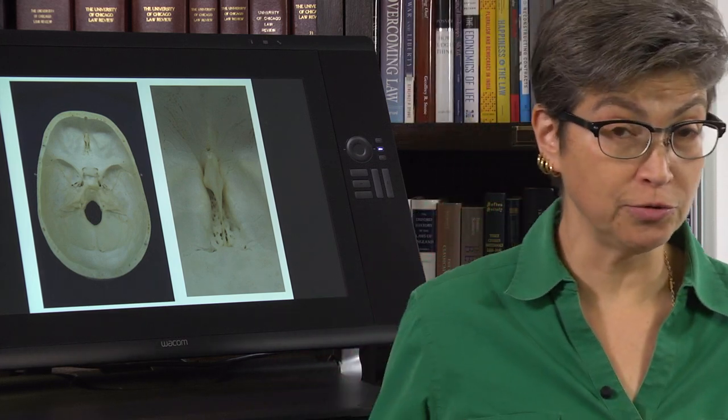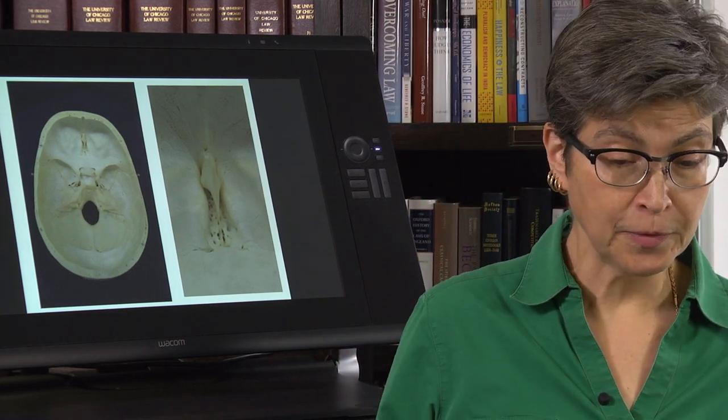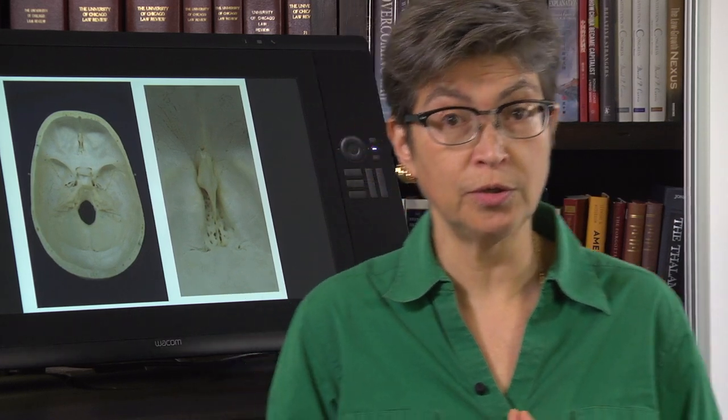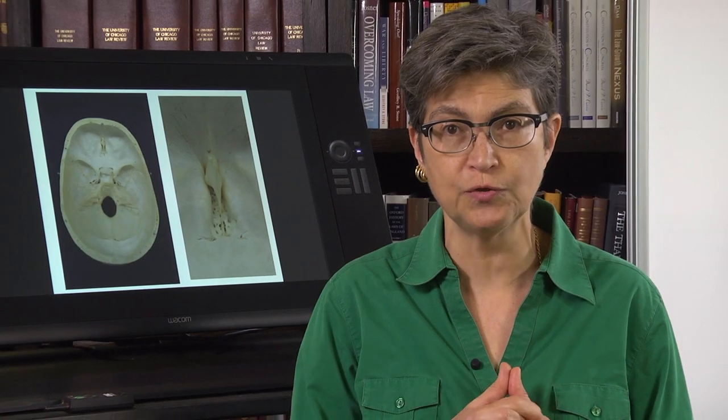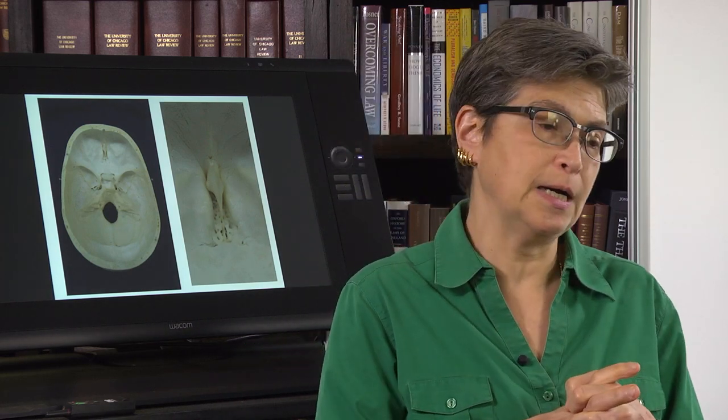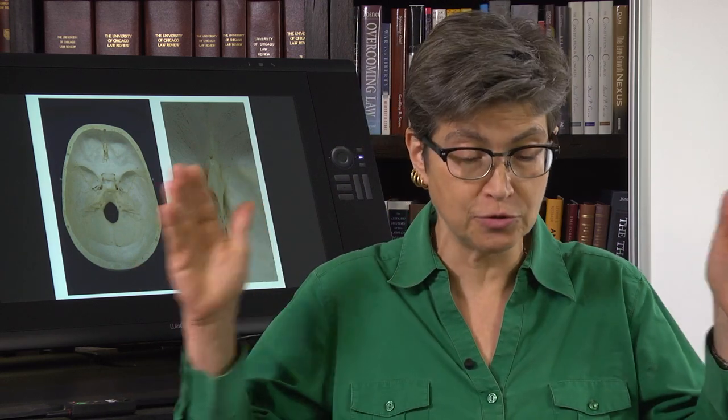We're going to talk about cranial nerves for a while. These are extremely important and incredibly useful diagnostic indicators. You need to know the cranial nerves and be able to distinguish whether a lesion or damage is located distally out in the periphery at the level of the cranial nerve, or within the central nervous system. That is our goal — to understand the difference between those three places.